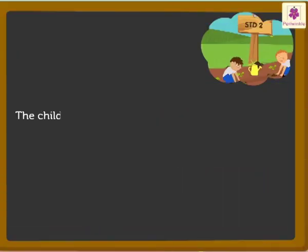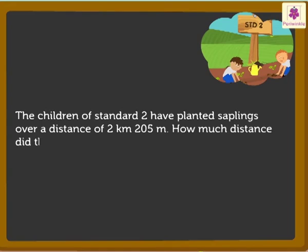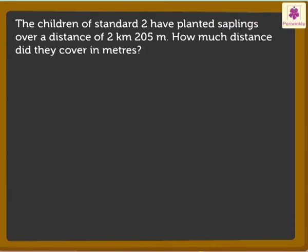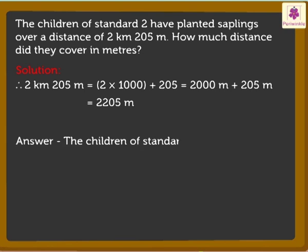Look, the children of Standard 2 have planted saplings over a distance of 2 kilometers, 205 meters. How much distance did they cover in meters? Here again, we have to find the answer in meters. So, 2 kilometers is equal to 2 into 1,000, which is equal to 2,000 meters. Now, we got all the numbers in meters, so let's add them. That is, 2,000 plus 205 is equal to 2,205 meters. So, the children of Standard 2 covered a distance of 2,205 meters.